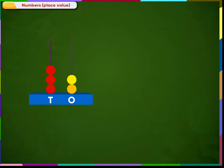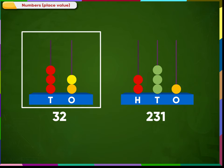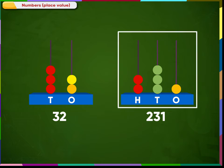An abacus has spikes depending on the number of digits in a number. To count a two-digit number, we use a two-spike abacus. To count a three-digit number, we use a three-spike abacus.